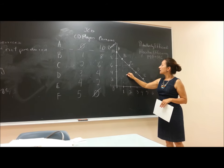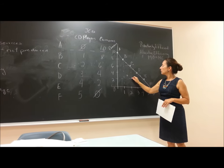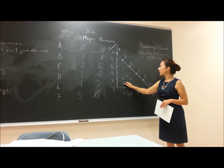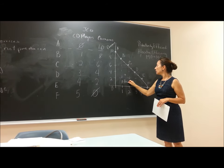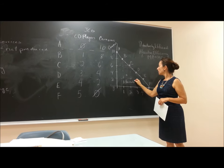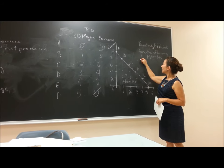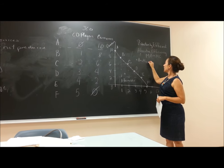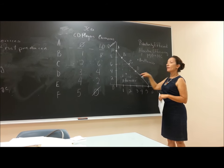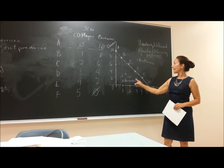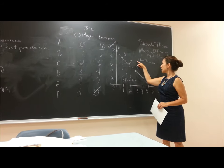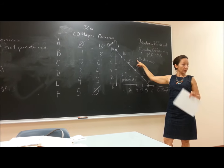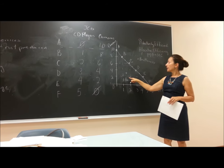Any point inside this curve is attainable. Any point outside is unattainable — unattainable because we don't have enough resources. For example, we can't produce three CD players and eight cameras because we don't have enough people or equipment. If we're inside the curve, say at two cameras and one CD player, we're not using our resources efficiently, so we need to increase production to get back on the line.